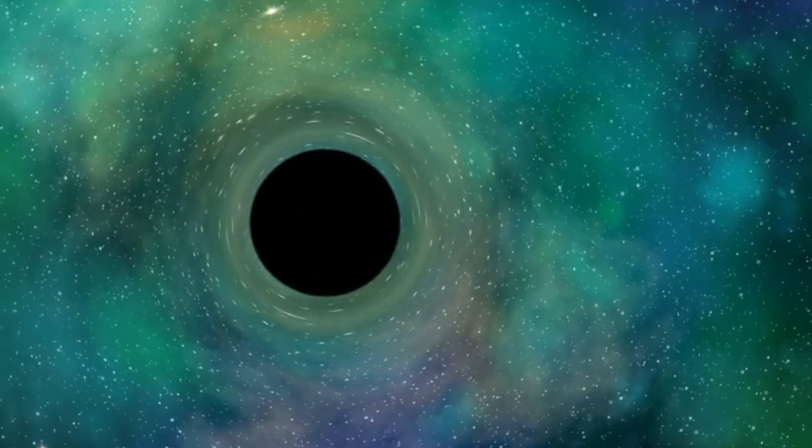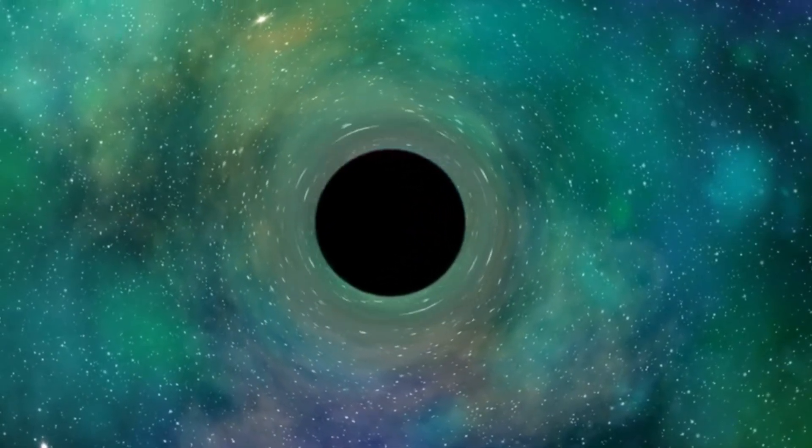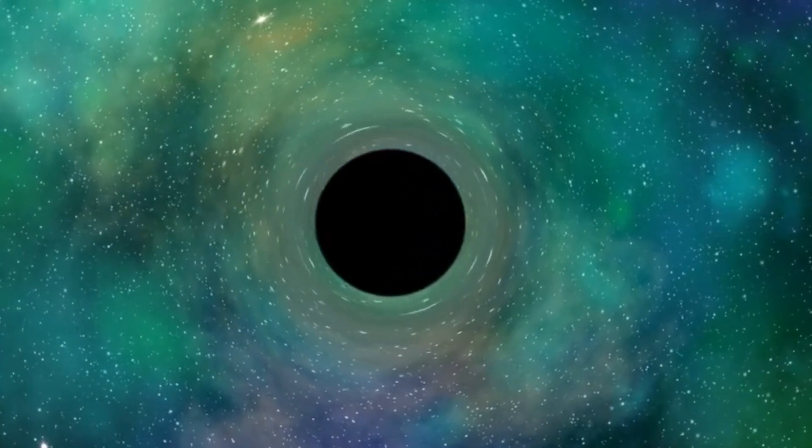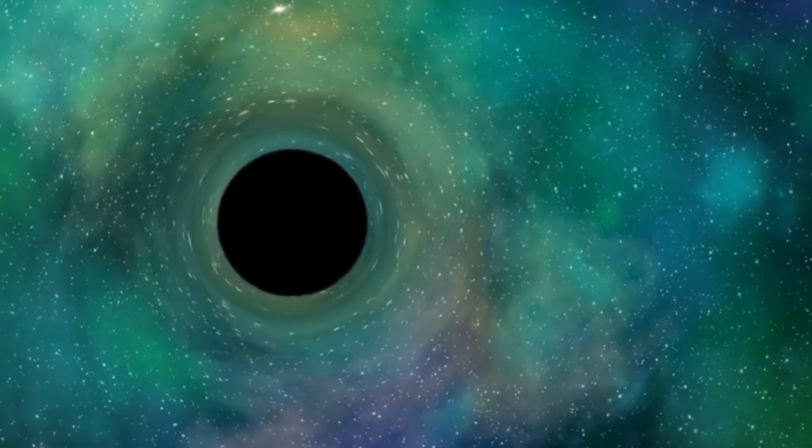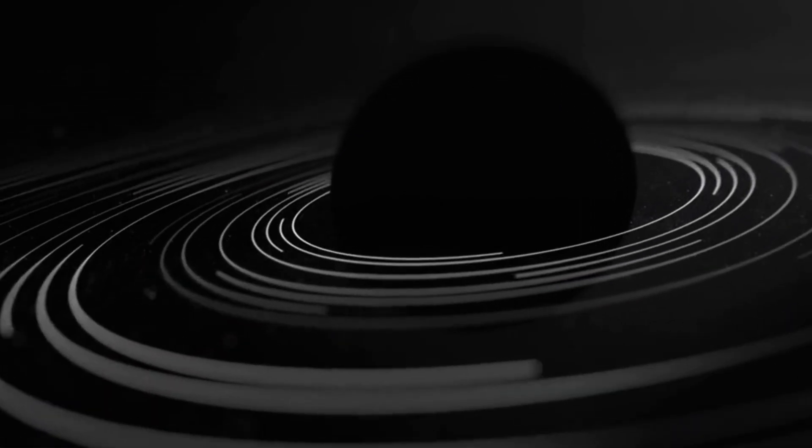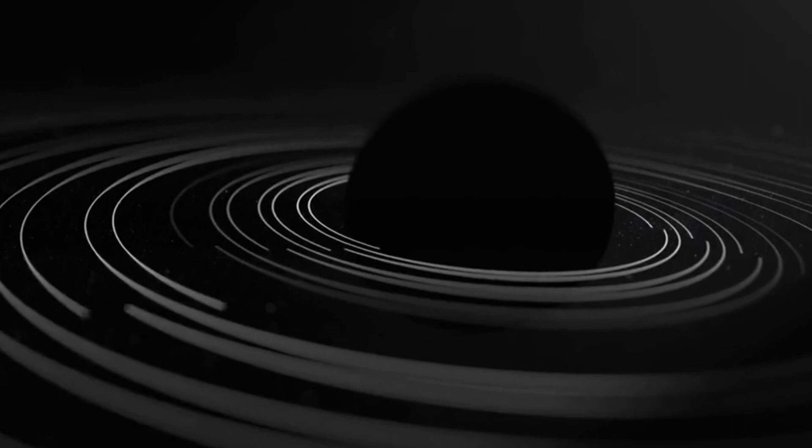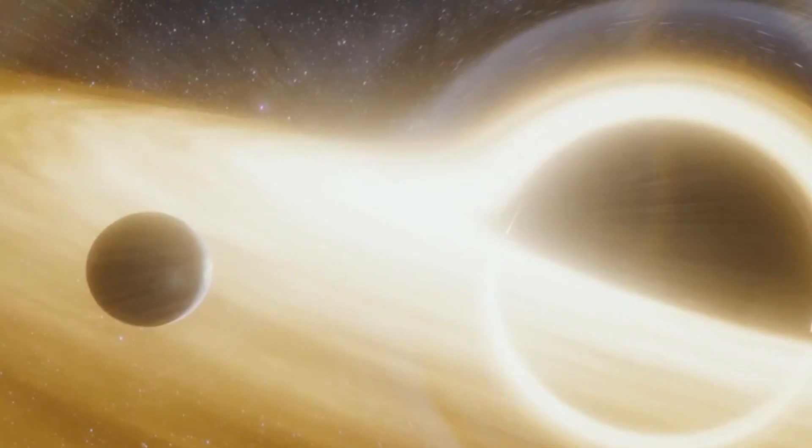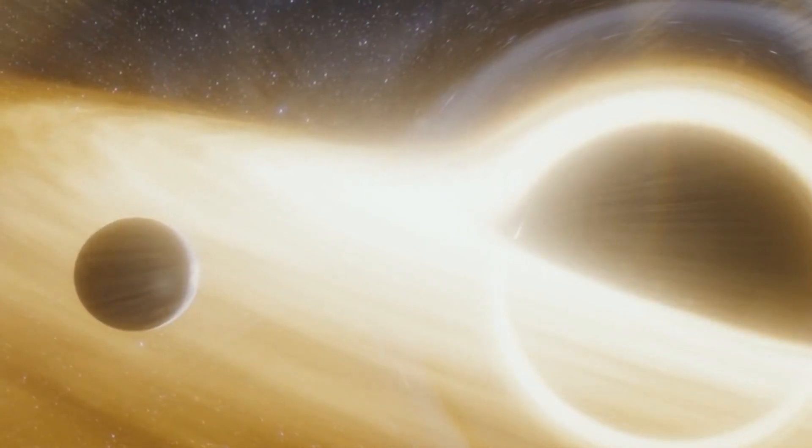Gravitational lensing provides a possible explanation for this strange phenomenon. Gravitational lensing occurs when light from a distant object is bent as it passes near a massive body, such as a black hole. The black hole's immense gravity distorts the light, creating a magnified or warped image of the object behind it.